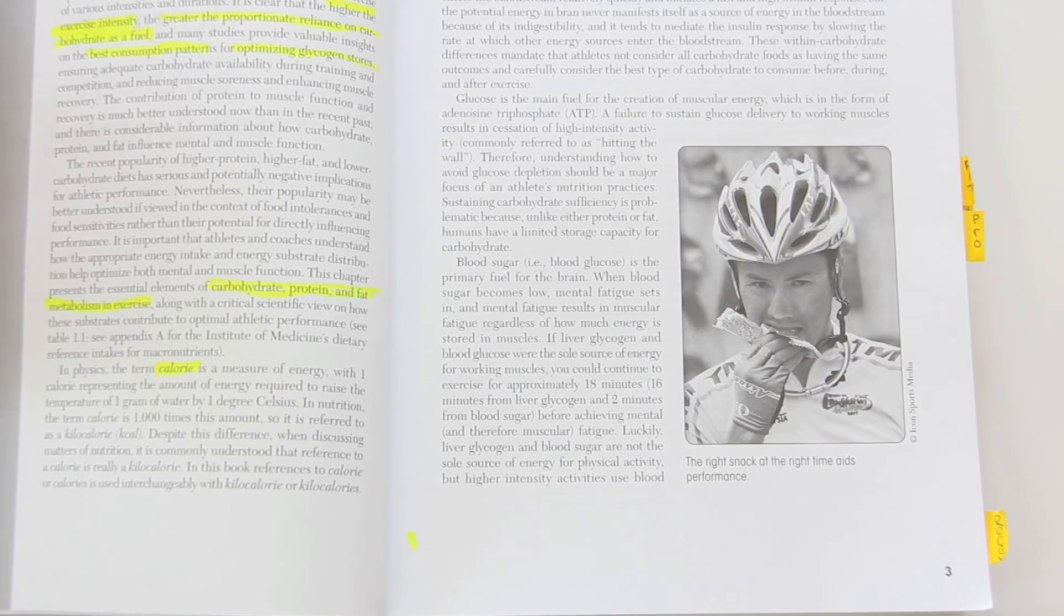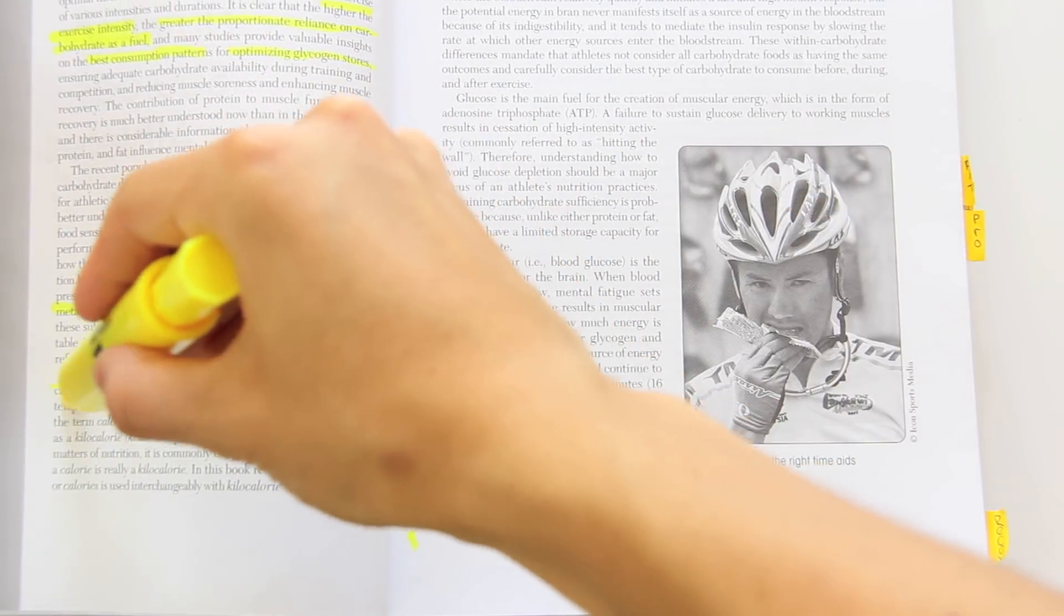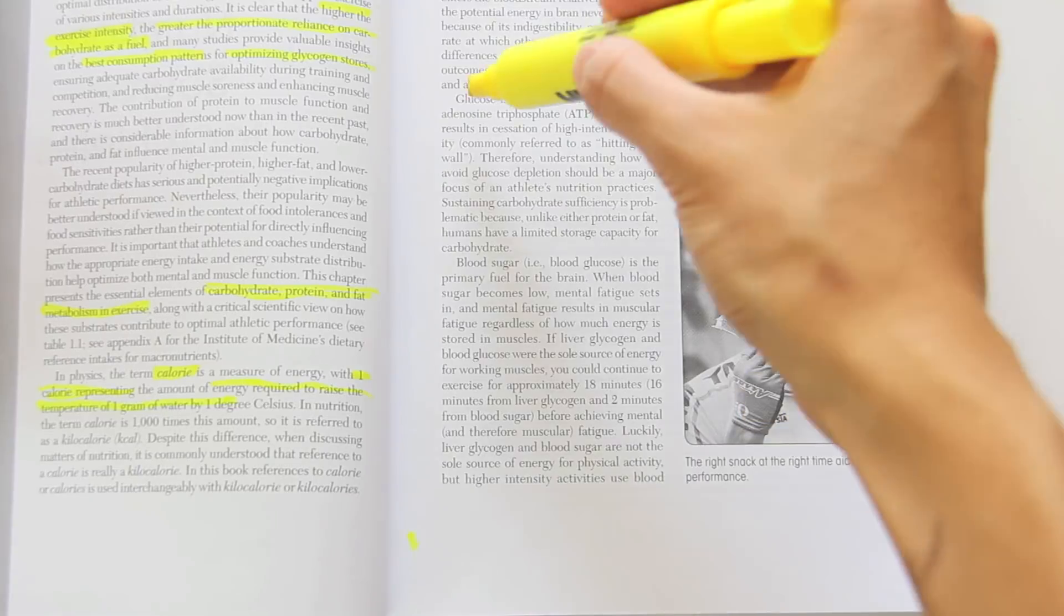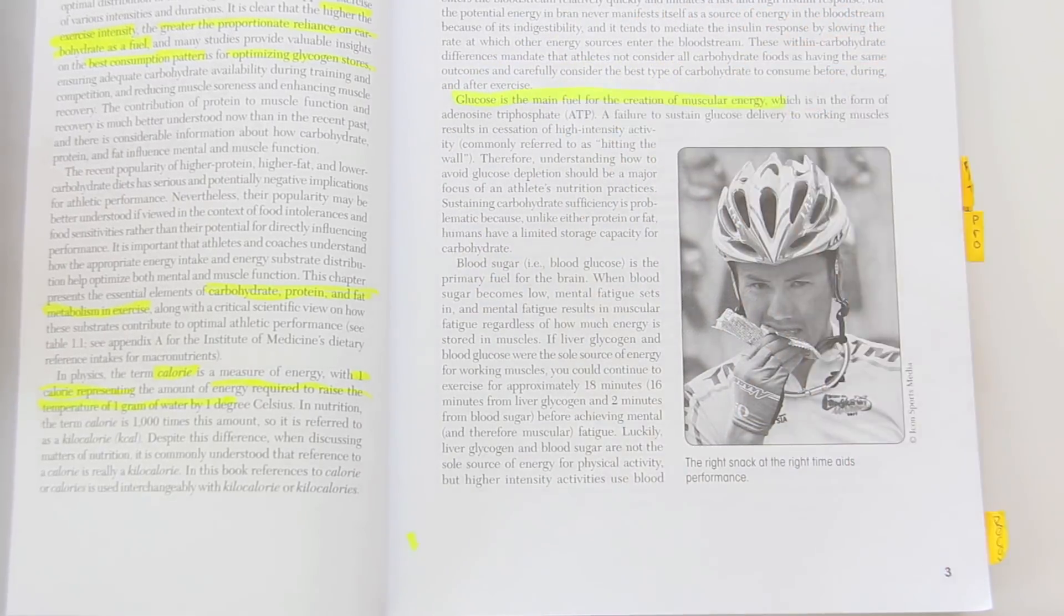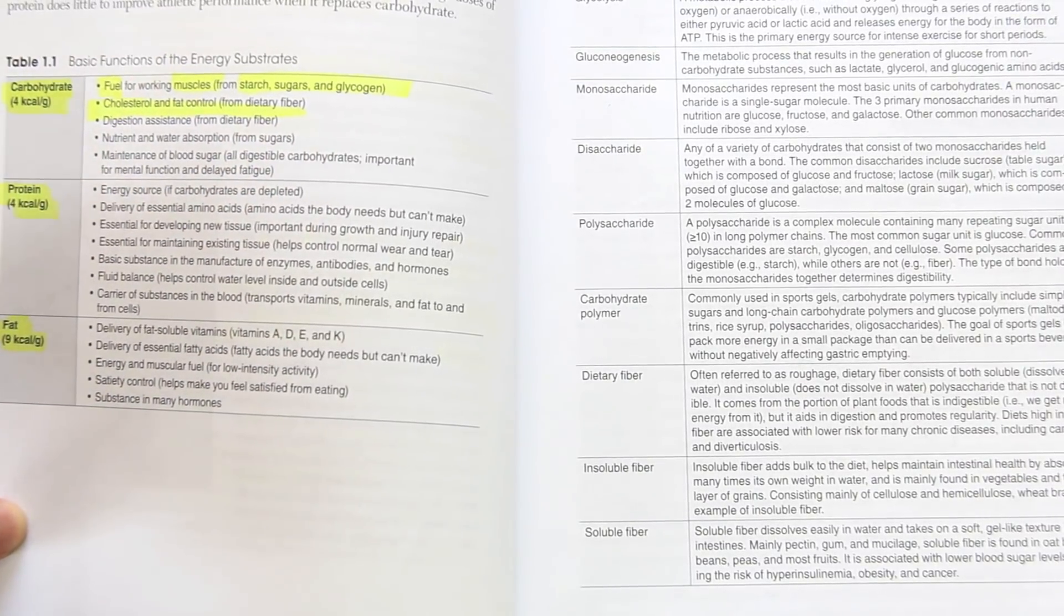I like to pick one color for each theme in a class. For example, all of my nutrition is always in yellow. What you want to do is pick out the keywords, people, places, things that you would be tested on.